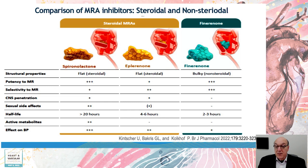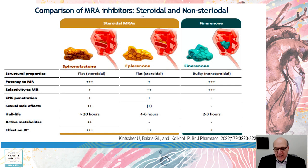The potency of finerenone is similar to spironolactone and far better than eplerenone. In terms of selectivity, it is the most selective of the three. There is no penetration of the brain, no sexual side effects, and the half-life is two to three hours. If you're wondering how it works all day — it has nothing to do with how long the drug lasts; it's how it interfaces with the receptor, and that enduring effect is why you see the differences. There are no active metabolites. If blood pressure is elevated, say 150–160, there are very good blood pressure-lowering effects, though in the trials most participants came in with good blood pressure control, so the effect appeared minimal.